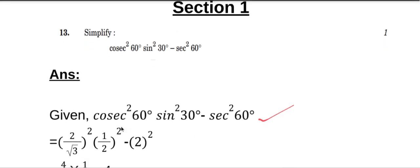We know that the value of cosec 60° is 2/√3. So cosec²60° = (2/√3)². The value of sin 30° is 1/2.